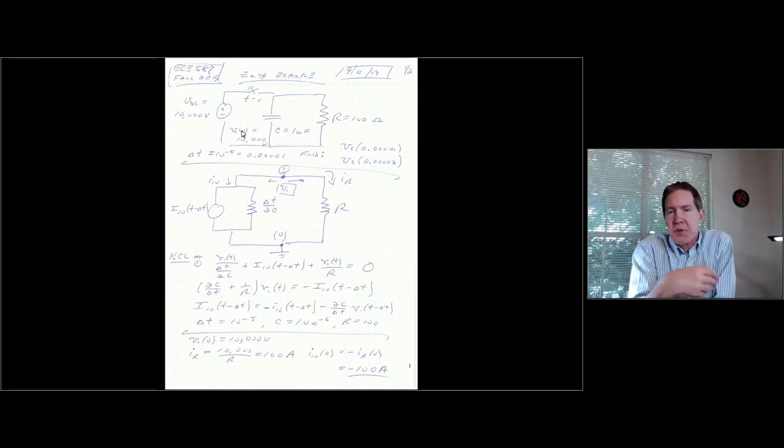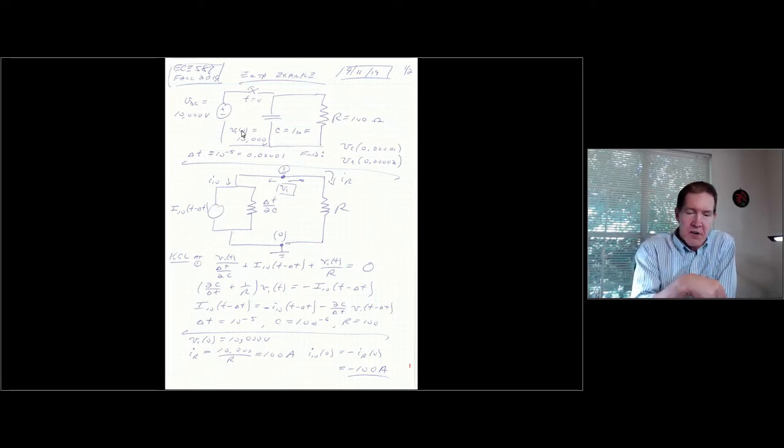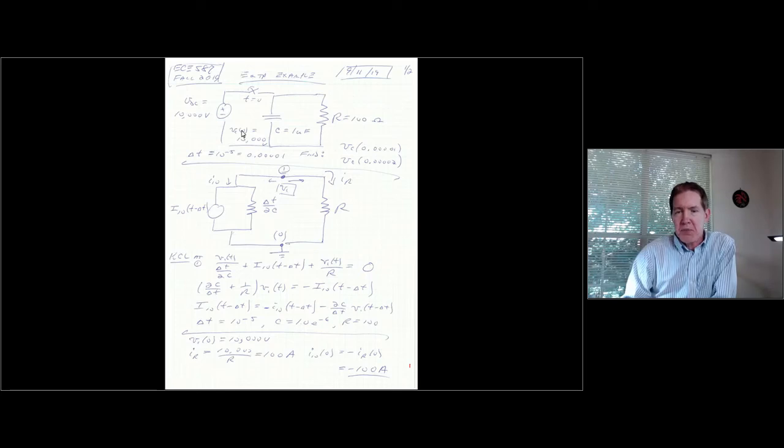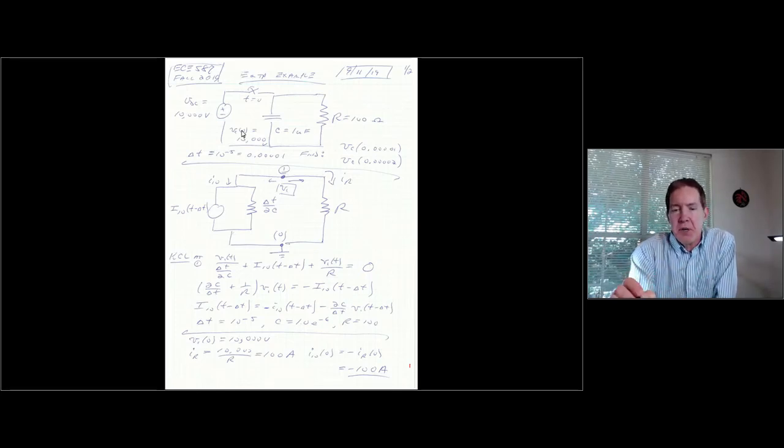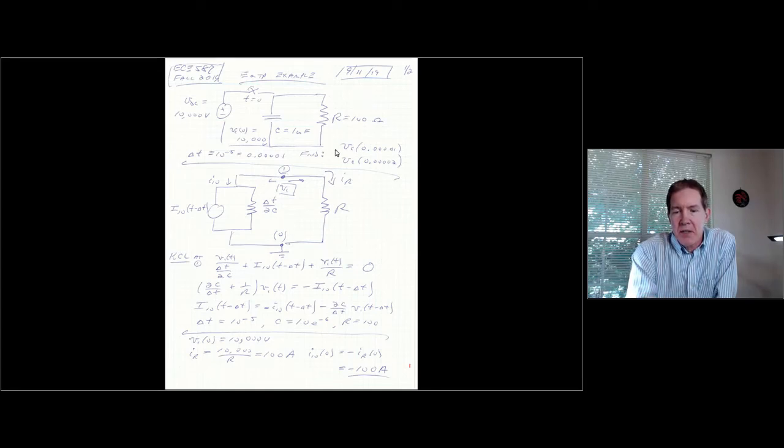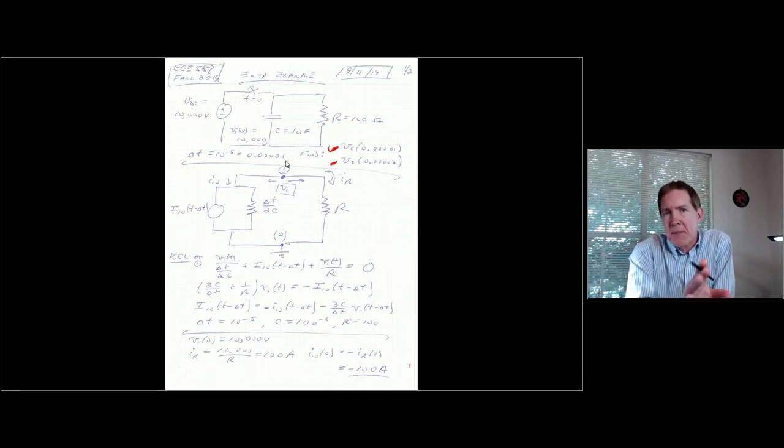Since this is an old exam problem, all I'm basically asking is just to calculate the first couple steps so I can verify you guys know how to apply the approach. And what you're asked to do is, given that you have the initial voltage at time zero, then calculate values for VC at 10 to the minus 5th, and then at 2 times 10 to the minus 5th. So those would be two successive time steps. So we're running at a time step that's one-tenth of the time constant.